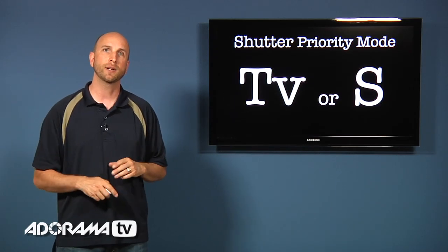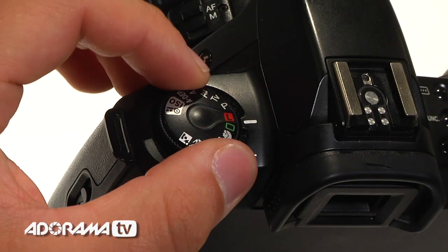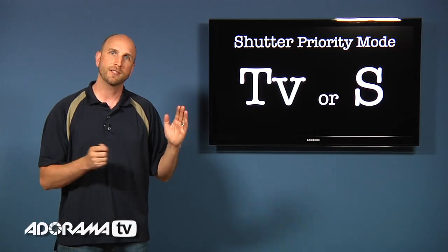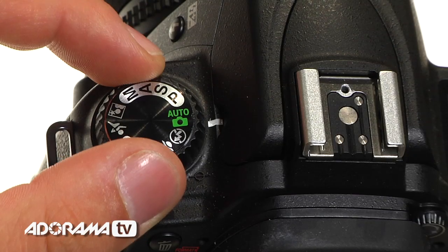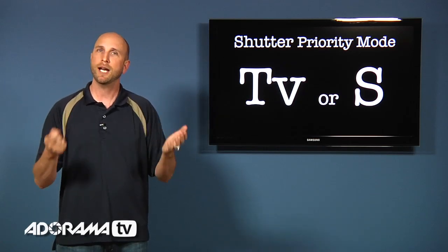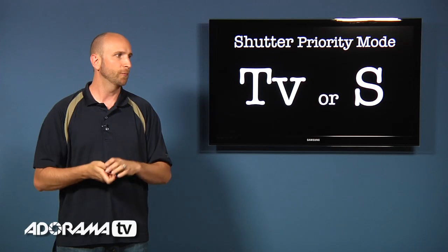Now you can do the exact opposite by using the shutter priority mode. Now on a Canon camera this is TV for time value. And on other cameras it's just S for shutter. And in this mode what you do is you set your shutter speed to a specific speed. And then the camera will figure out how large or how small the aperture opening should be.